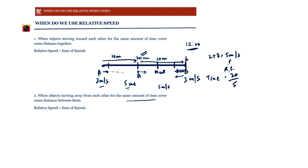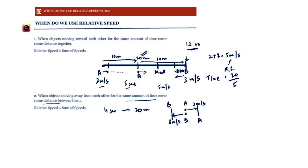When objects move away from each other for the same amount of time, we also use relative speed. Say A and B both start moving at the same time in opposite directions — A at 2 meters per second and B at 3 meters per second. After 1 second, there are 5 meters between them — the sum of their speeds. So if asked for the distance after 4 seconds, it's 5 meters per second times 4 seconds, giving 20 meters between them.